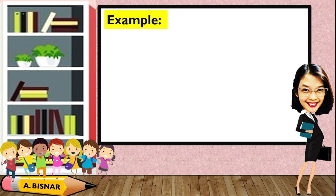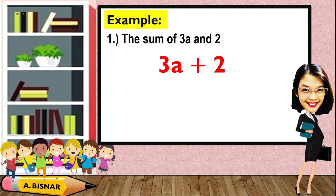Let us start by giving examples of algebraic expressions. Say we have the sum of 3a and 2. Well, this can be written as 3a plus 2. This is an example of an algebraic expression because it is a combination of numbers and variables and an arithmetic operation, which is addition.